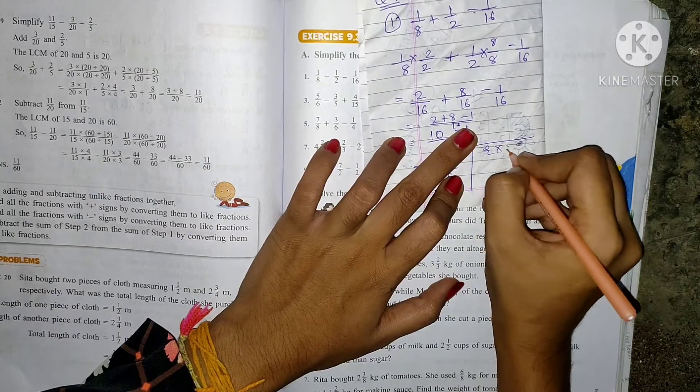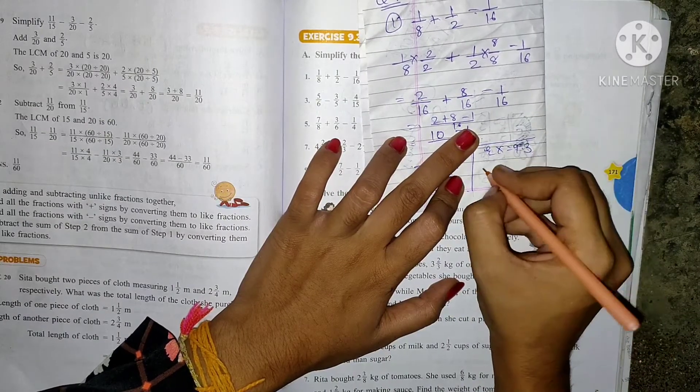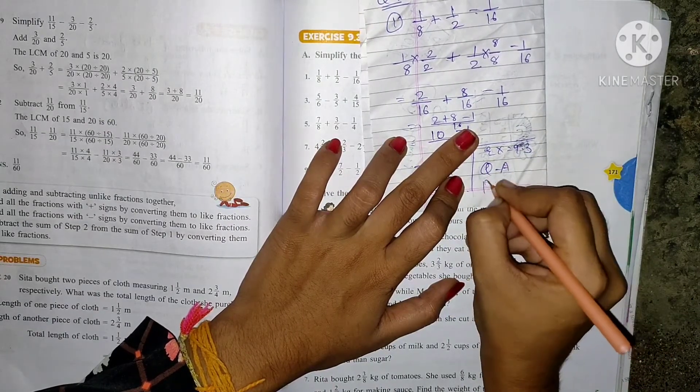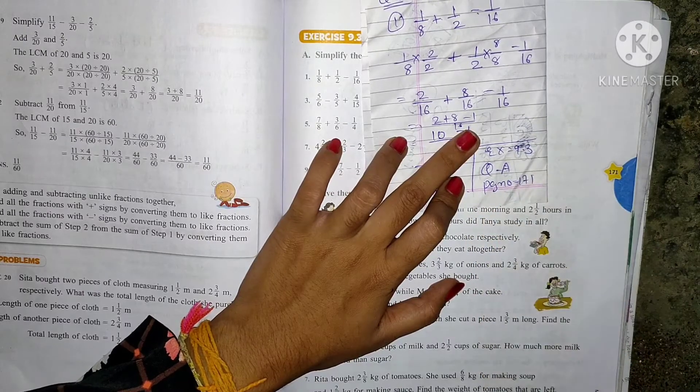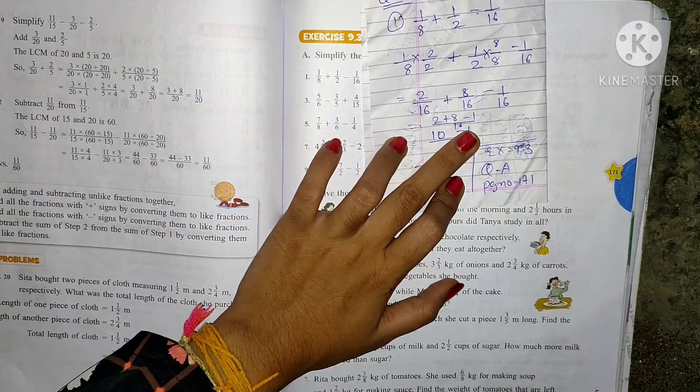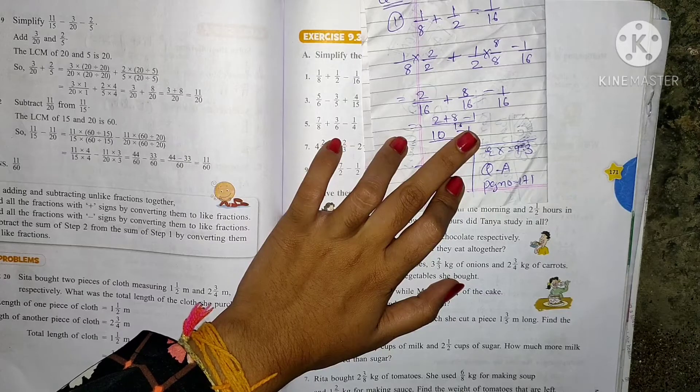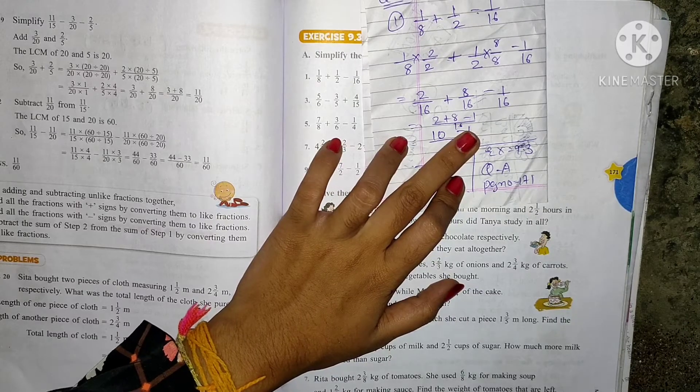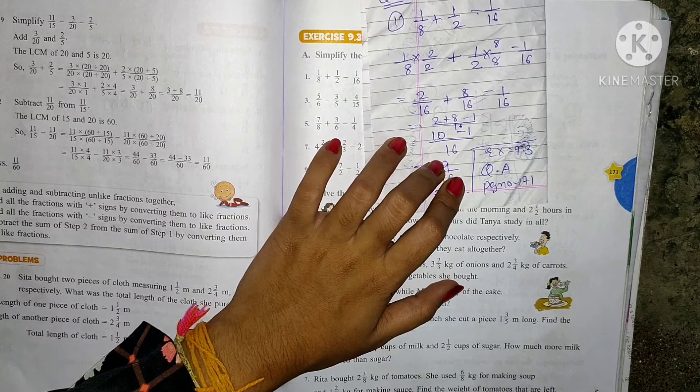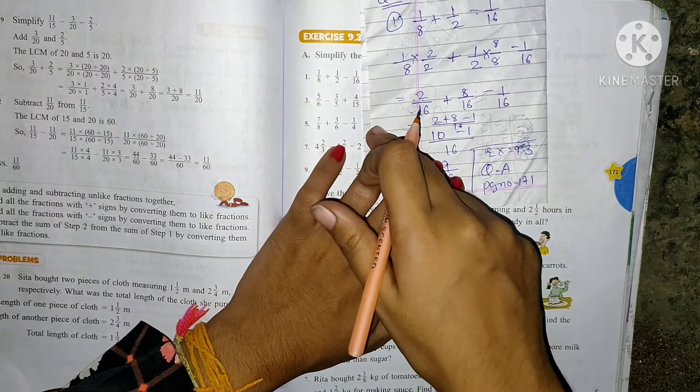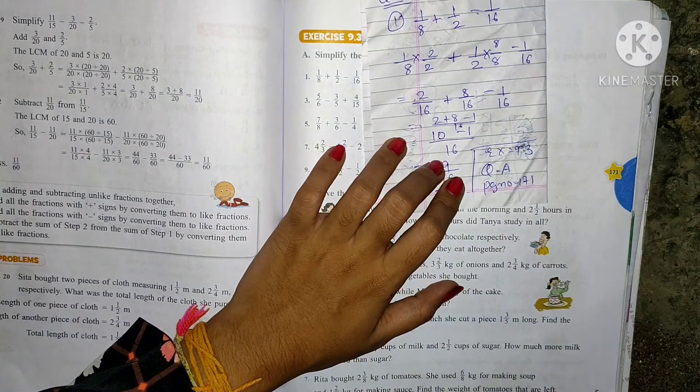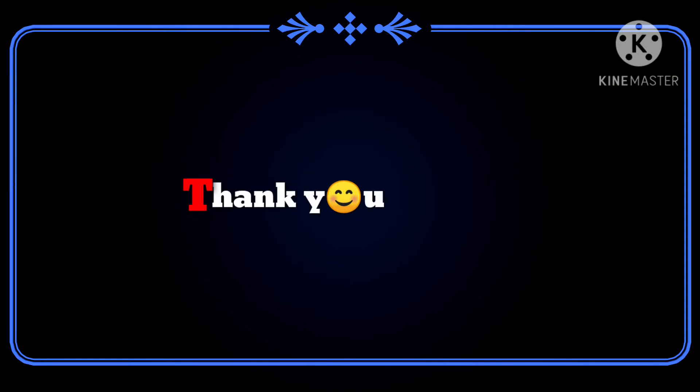your homework is Exercise 9.3, question number A, page number 171. Okay, so this is your homework. Okay, so take care. Bye bye. Thank you. And you have to do these remaining sums. Okay, so bye bye, take care. Thank you.